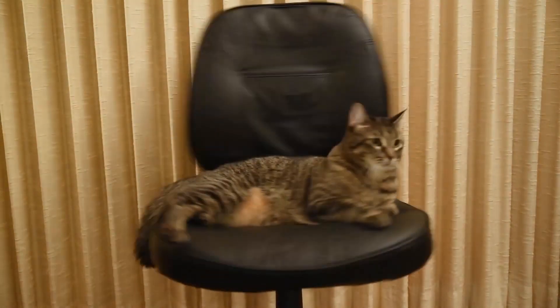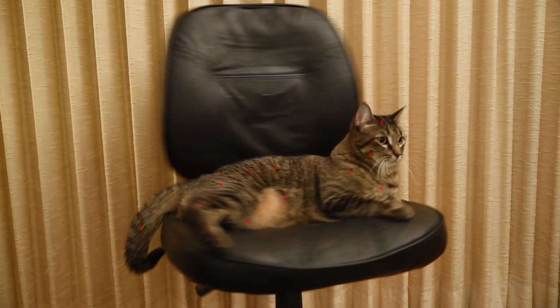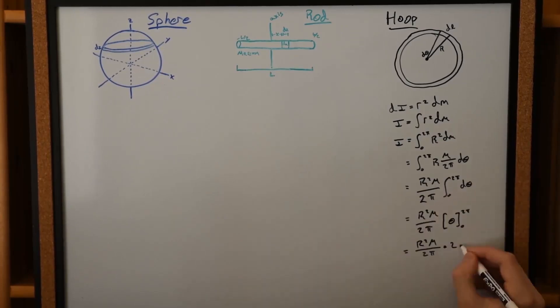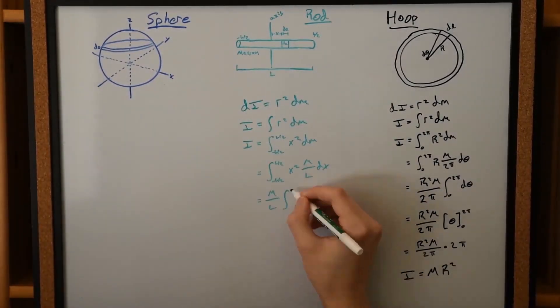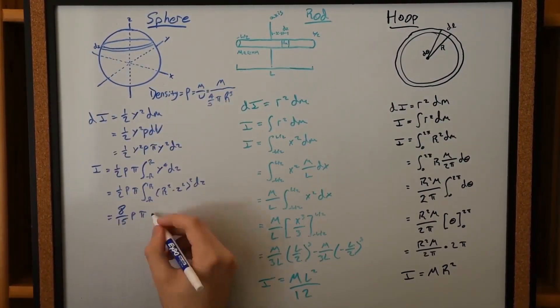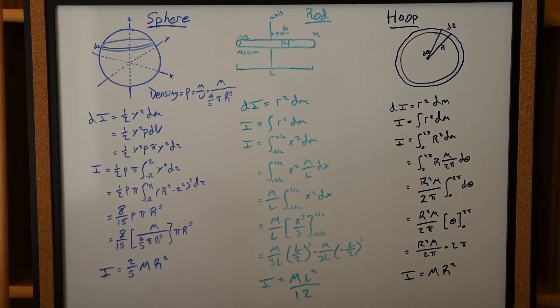A complex three-dimensional object is made up of an infinite number of masses at various distances from any given axis of rotation, so to find the rotational inertia of the object, we would need to somehow add up all the mR squareds. This is done using calculus. In this way, we can come up with formulas for the rotational inertia of common objects based on their shape.